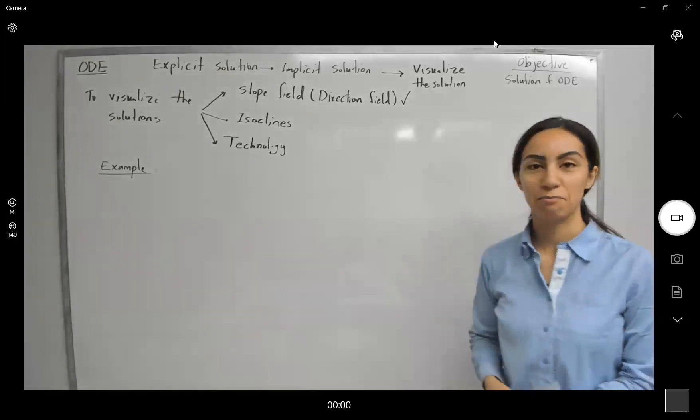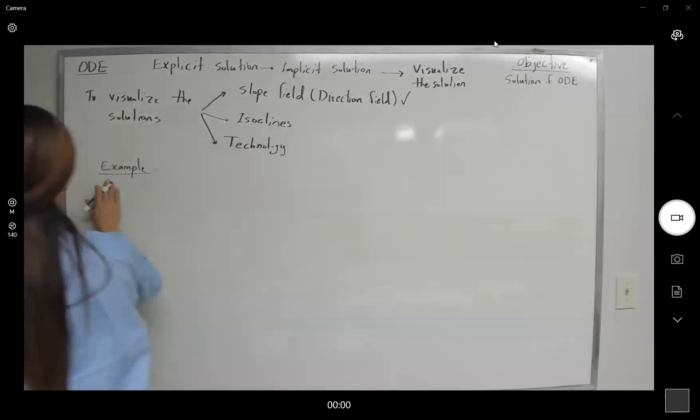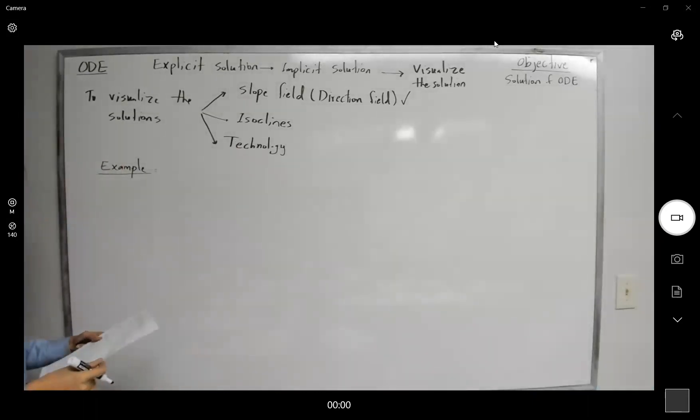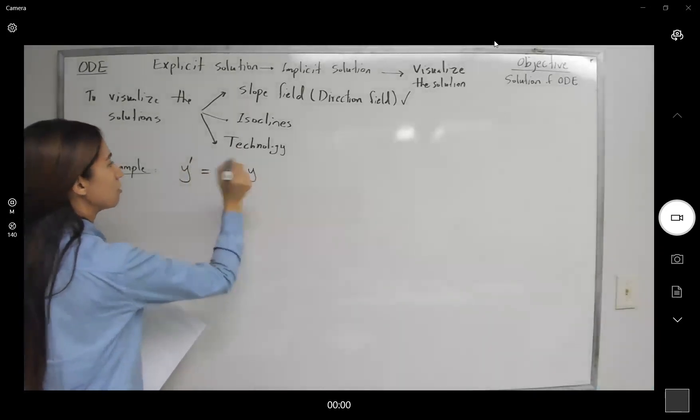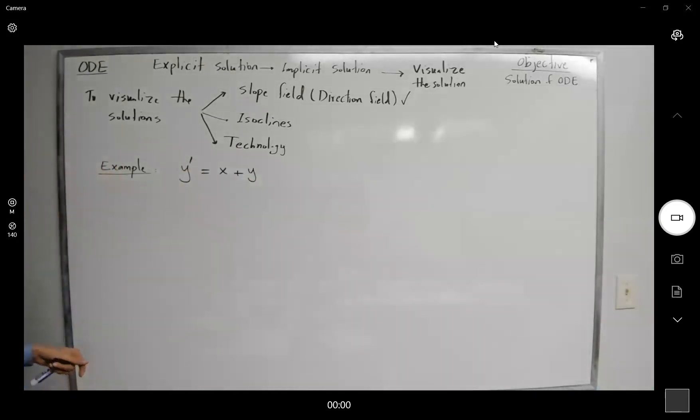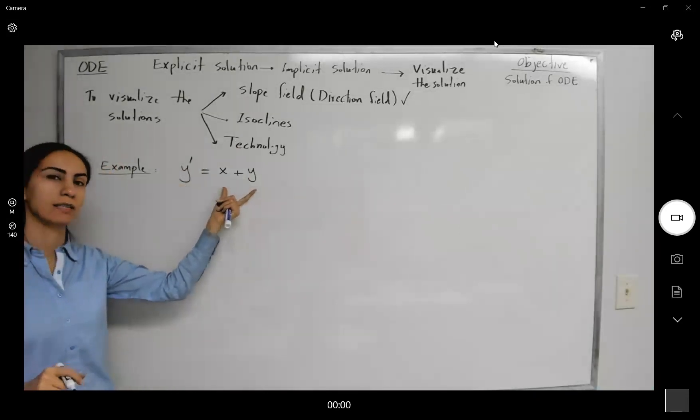Now, what's the isoclines method? Let's take a look at one example. Here you have a differential equation, y prime is equal to x plus y. Well, in this case, you have a differential equation and it's equal to f of x and y.